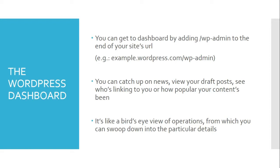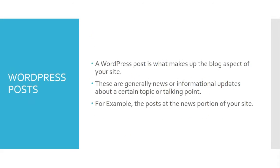Next, we are going to see WordPress posts. A WordPress post is what makes up the blog aspect of your site. These are generally news or informational updates about a certain topic or talking point. Posts are listed in reverse chronological order and can be tagged, categorized, and even archived on your site. You can think of an example of posts as the news portion of your site. They are dynamic and constantly changing the content your end users see.